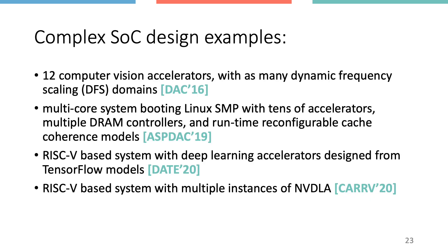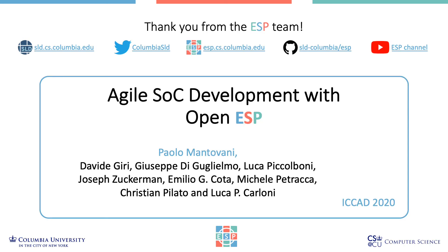To conclude, here are examples of complex SoCs demonstrated on FPGA from previous talks: a 12-accelerator computer vision system with dynamic frequency scaling domains, a multi-core system booting Linux SMP with tens of accelerators demonstrating runtime reconfiguration of cache coherency models, a RISC-V-based system with deep learning accelerators designed from TensorFlow models, and a RISC-V-based system with four instances of NVDLA. Thank you from the System Level Design Group and the ESP developers. Please visit our webpage and try the online tutorials to start designing with the agile flow of OpenESP.